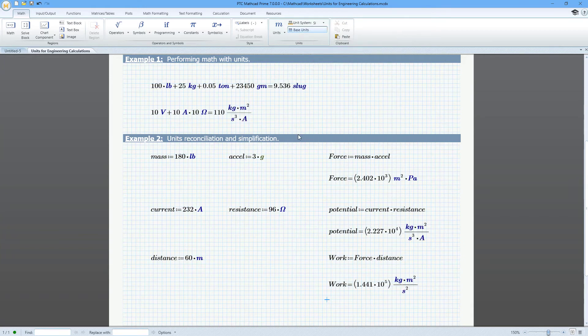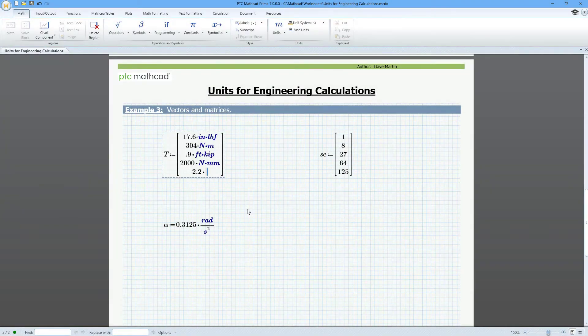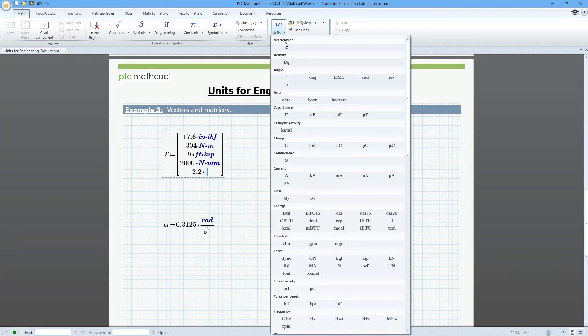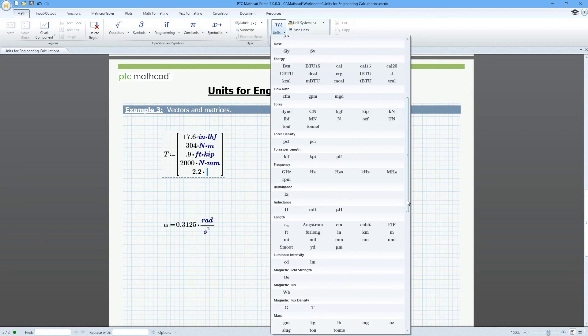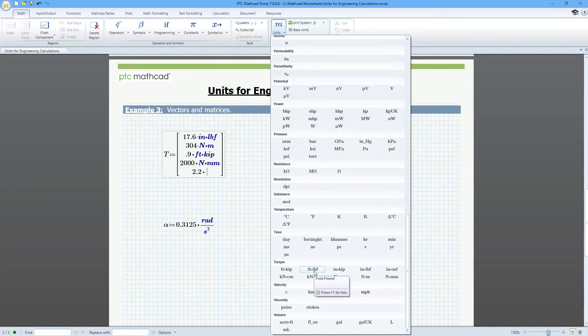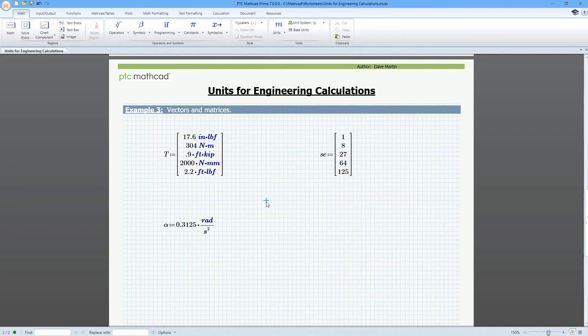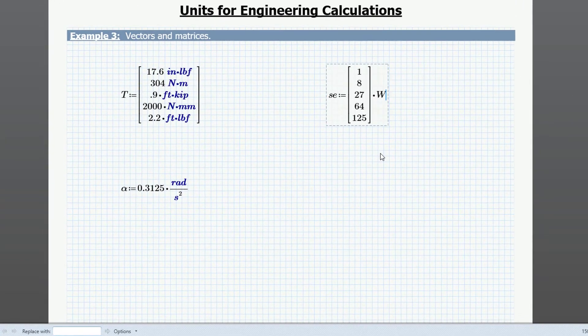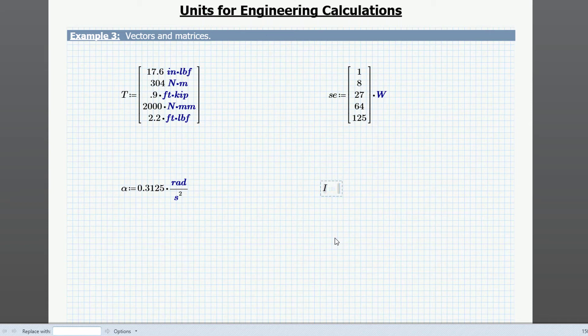You can use units with vectors and matrices either by multiplying each element by the desired unit or specifying the unit for the entire vector or matrix. These units will be taken into account when performing math with the vector or matrix.